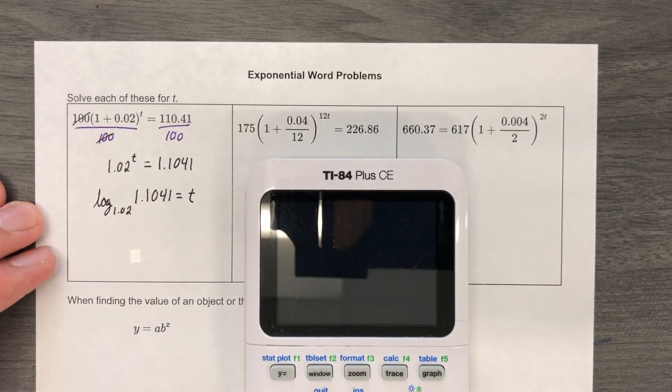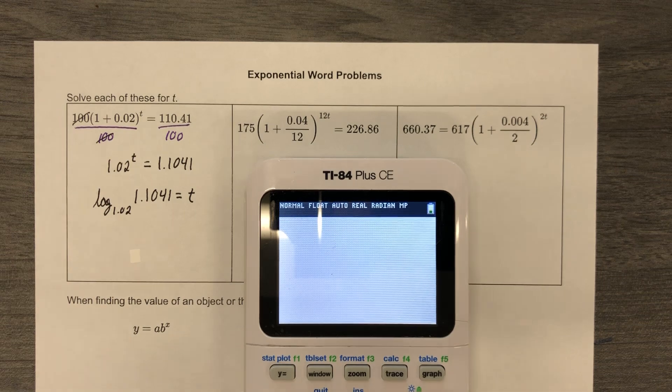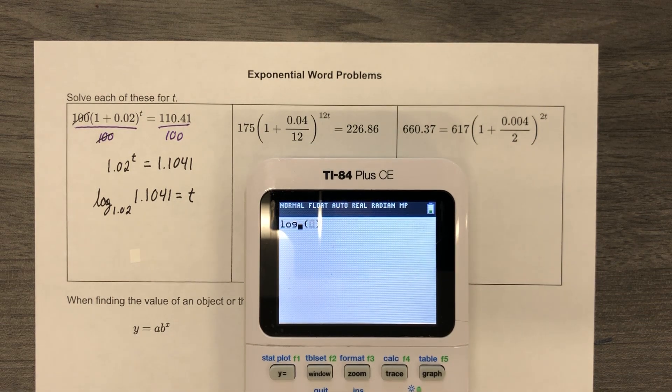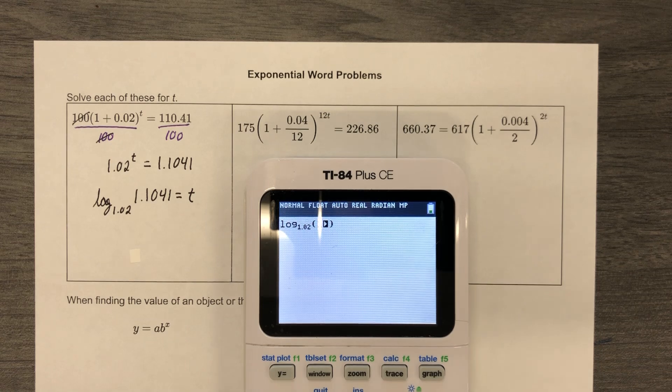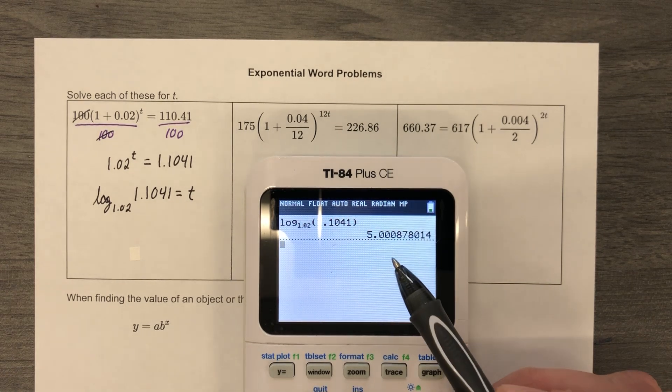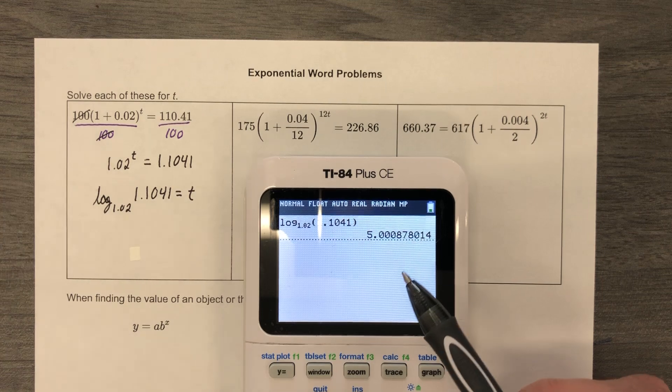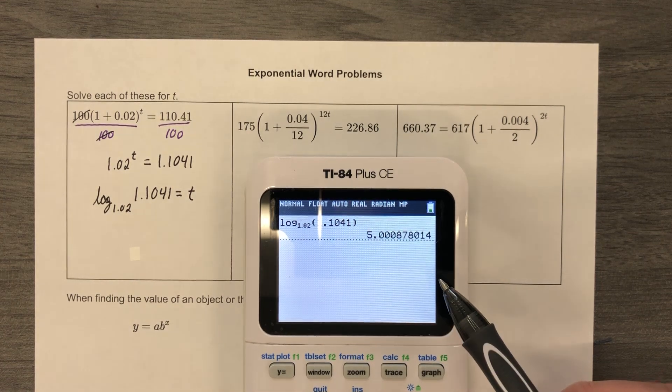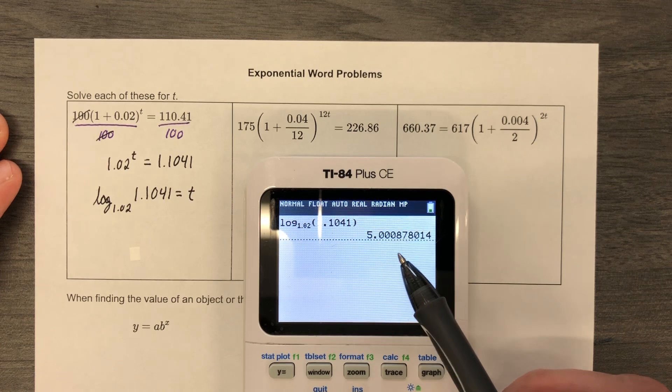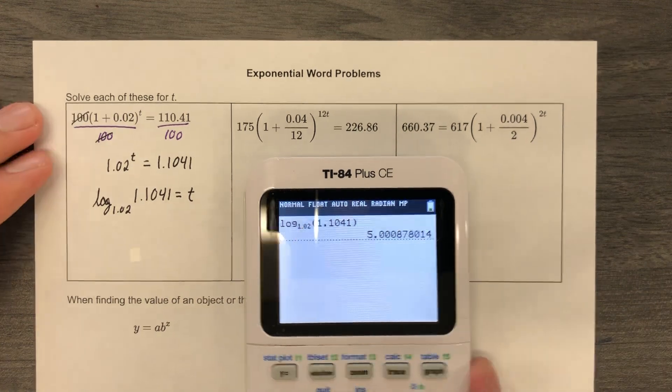Now we will figure out what that is. And we're probably going to get a pretty neat number. It doesn't always work out that way. That's not what I wanted. Log base 1.02 of 1.1041, and that gives me, let's round. We're done, so let's round. On these problems, you're going to have an obvious place to round. That won't always happen, but right now it's like 5.0008. Just call it 5. Just really call it 5.